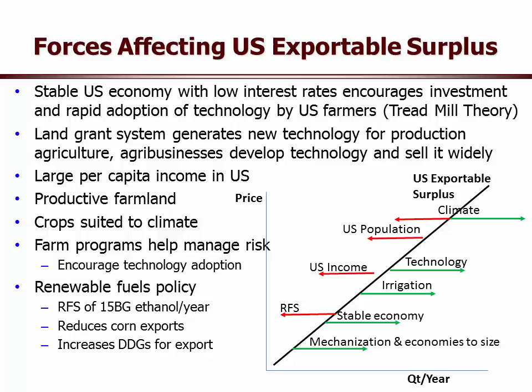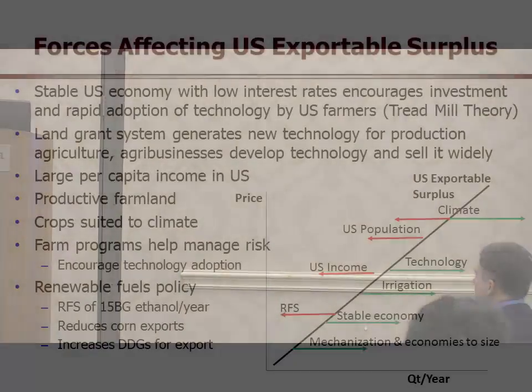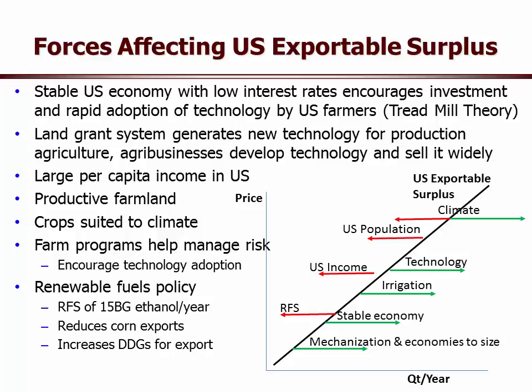Now let's look at exportable surplus — a new term. Exportable surplus is what we produce that we don't eat at home. If you had a family garden, you eat all you can and sell the rest. That's what we're doing with US corn, soybeans, rice, cotton, and wheat. Our stable US economy with low interest rates and our land-grant university system that has generated technology — all of those things combine to give us a very productive agricultural system. Technology rolls out every year and farmers adopt it because they have a stable economy, low interest rates, and they know they can sell the surplus overseas.